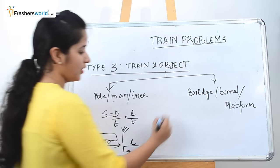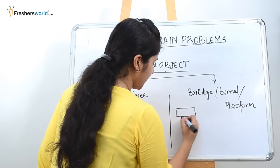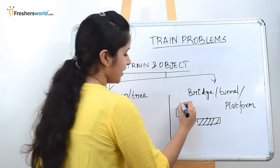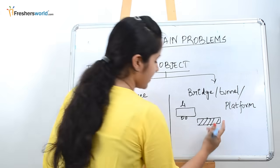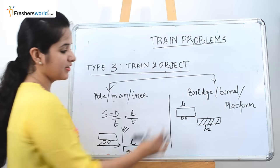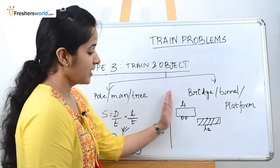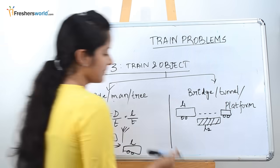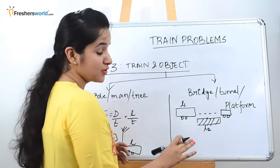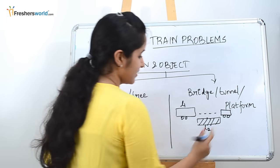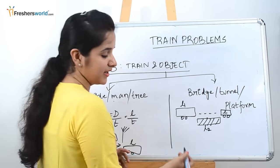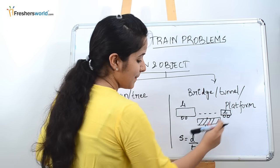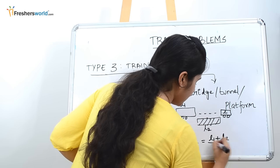For a bridge, tunnel, or platform: if the train length is L1 and the bridge length is L2, the train has completely crossed when its rear end clears the far end of the bridge. The total distance traveled is L1 plus L2. So the formula becomes: speed = (L1 + L2) / time.